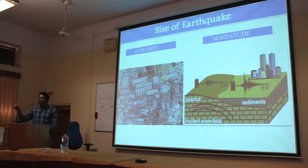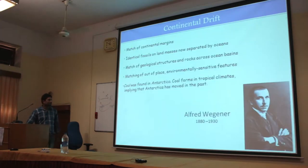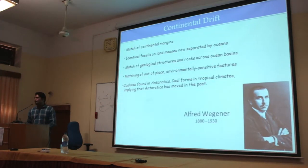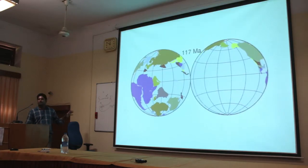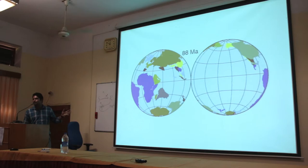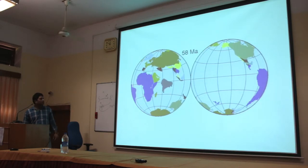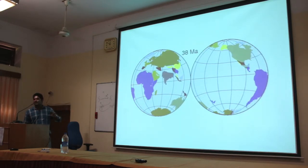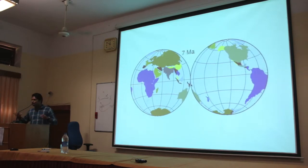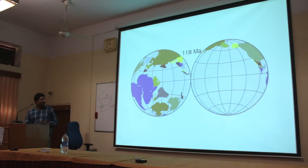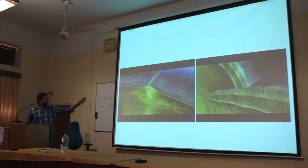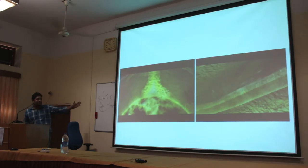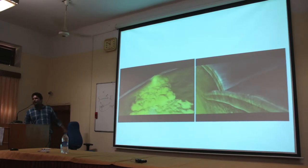Magnitude is basically the log of A divided by T, plus some corrections. Regarding where earthquakes will occur — Alfred Wegener says that the earth consists of different plates, and these plates have been moving since geological past, meaning millions of years. When these plates collide with each other or move away from each other, that is the generation of the earthquake.